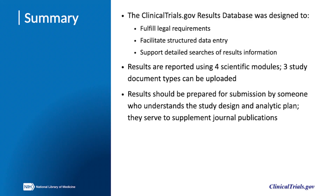In summary, the clinicaltrials.gov results database was designed to fulfill legal requirements, facilitate structured data entry, and support detailed searches of results information. Results are reported in four scientific modules reflecting participant flow, baseline characteristics, outcome measure analyses, and adverse events. There are also three types of supporting documentation that can or should be appended: the study protocol, the statistical analysis plan, and the informed consent form. Results should be prepared by someone who understands the study design and analytic plan. Results submissions to clinicaltrials.gov supplement journal publication by allowing report of all analyses and studies.